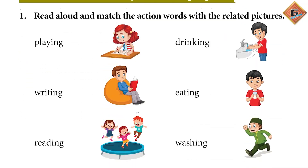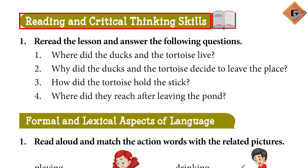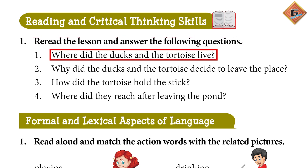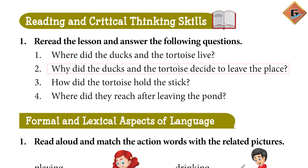Ji, ab chalte hain aap ne page number 54 pe. Page number 54 par humare paas hai Reading and Critical Thinking Skills. Yahaan par humne question answers diye hain. Humara pehla question hai: Re-read the lesson and answer the following questions. Where did the ducks and tortoise live? — The ducks and the tortoise lived around the pond. Why did the ducks and the tortoise decide to leave the place? — They decided to leave the place because there was no rain for long and the pond dried up. There was no food for them.